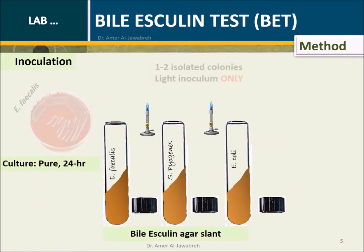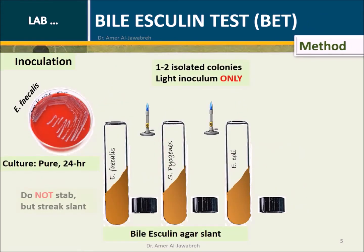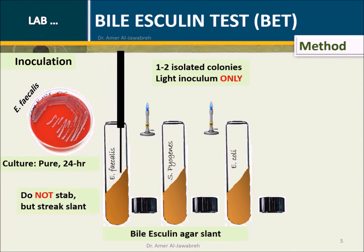With an inoculating wire loop or stab, pick up a light inoculum of a pure colony from the culture plate. Zig-zag streak on the surface of the slant. Do not stab.